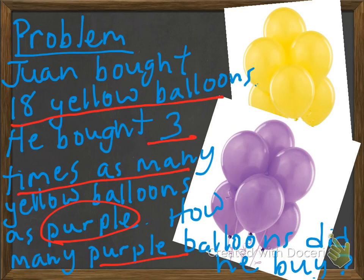Let's take a look here. What do we know? We know that Juan bought 18 yellow balloons, and he also bought three times as many yellow balloons as purple. What do they want us to find out? How many purple balloons did he buy? So we're given certain information, but we also have to find other information.